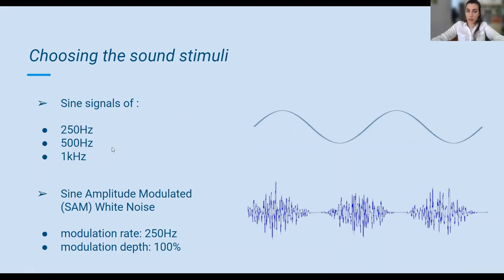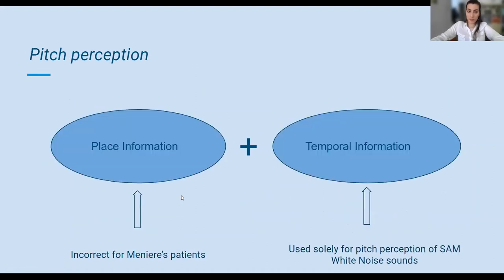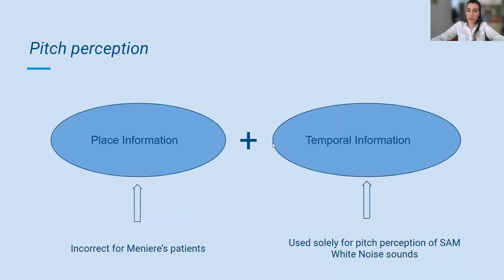These sounds are also used during the classic PTA measurement. The fourth sound, however, is a stimulus of sine-amplitude modulated white noise, with a modulation rate of 250 Hz and modulation depth set at 100%. The idea behind this choice lies in the theory that pitch perception results from the combination of both temporal and place information. Place information created by the dysfunctional basilar membrane of a Meniere's patient may be incorrect, contrary to temporal information that remains unaffected and is actually used solely for pitch perception of some noise.